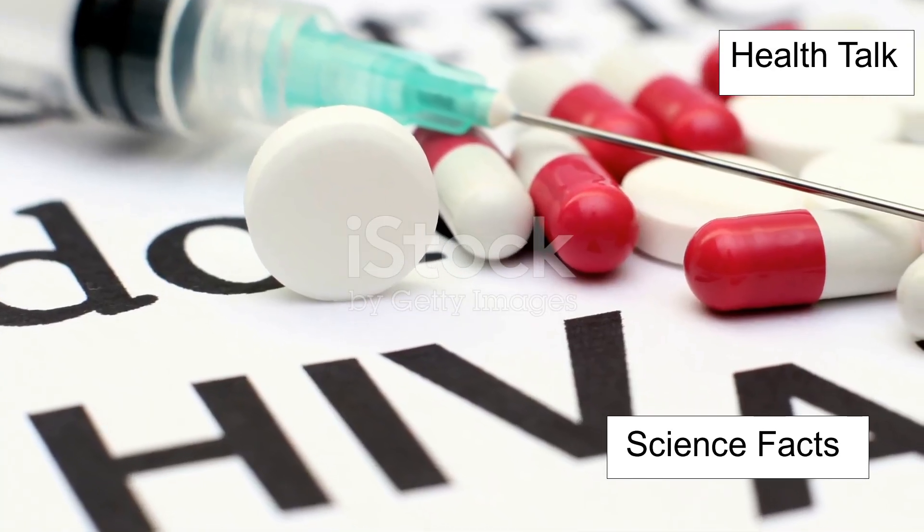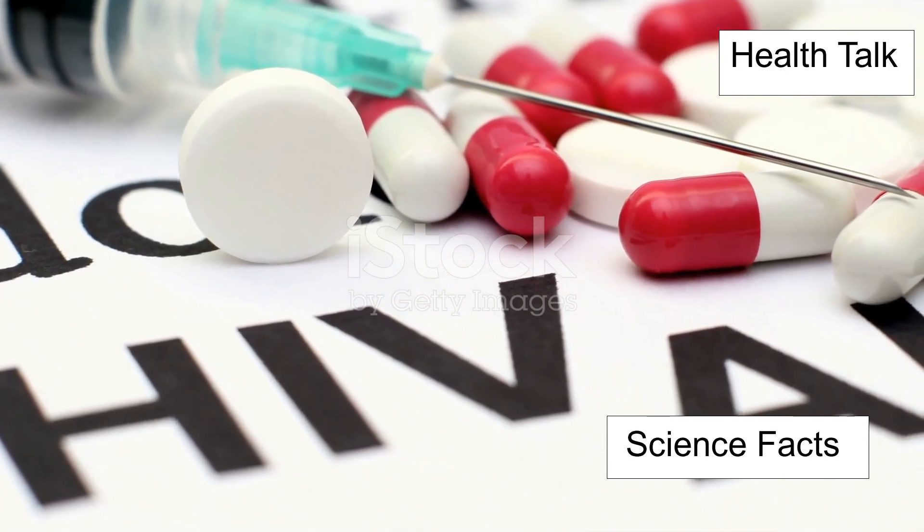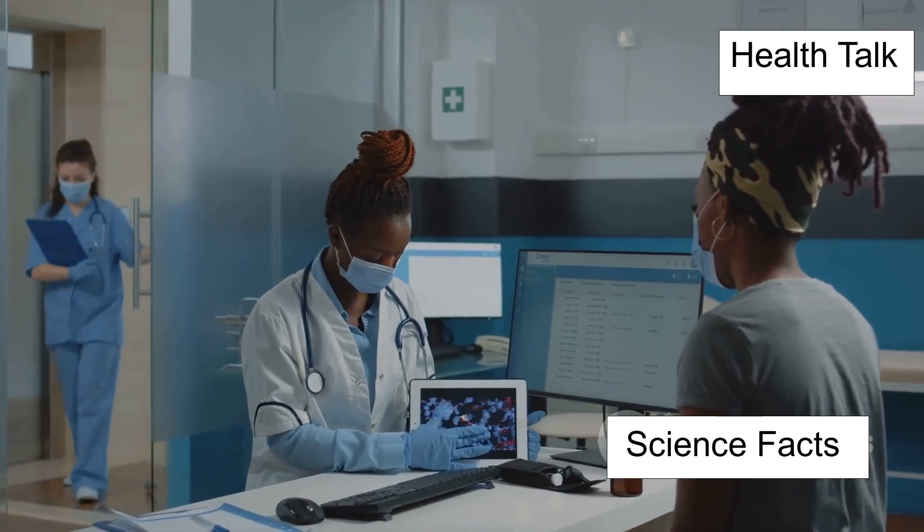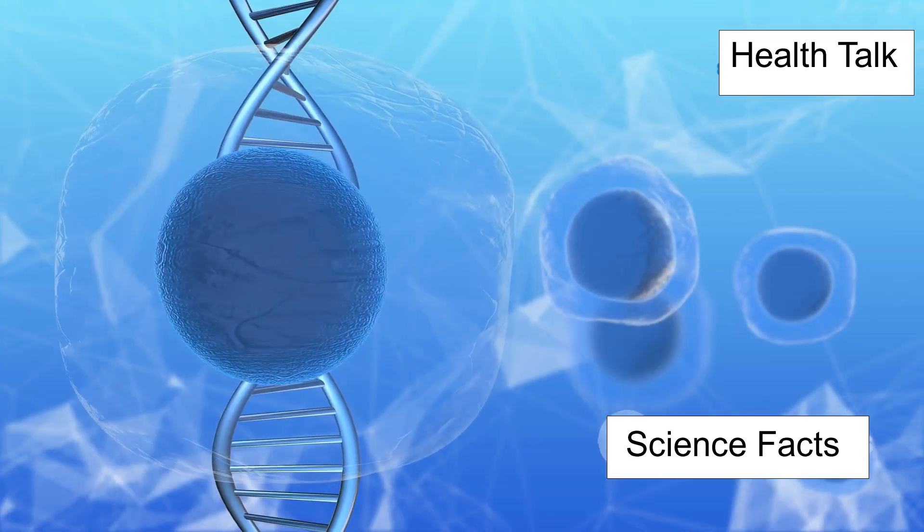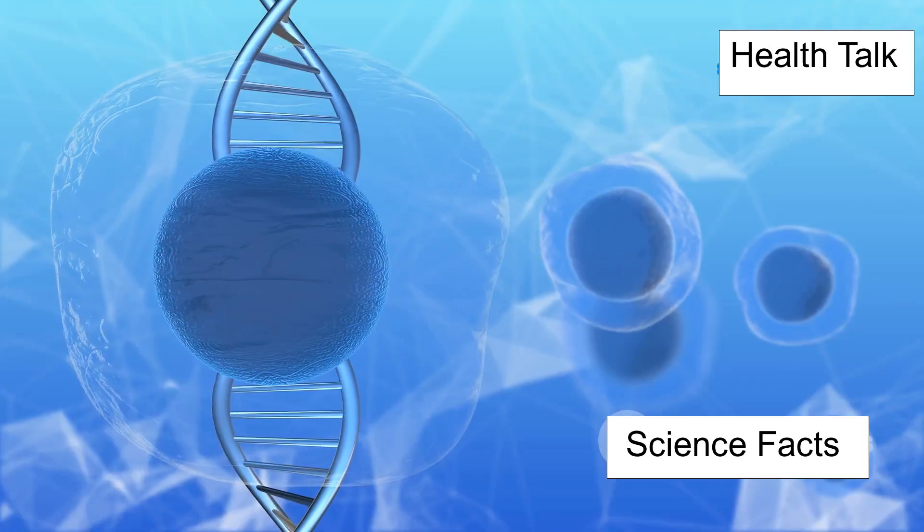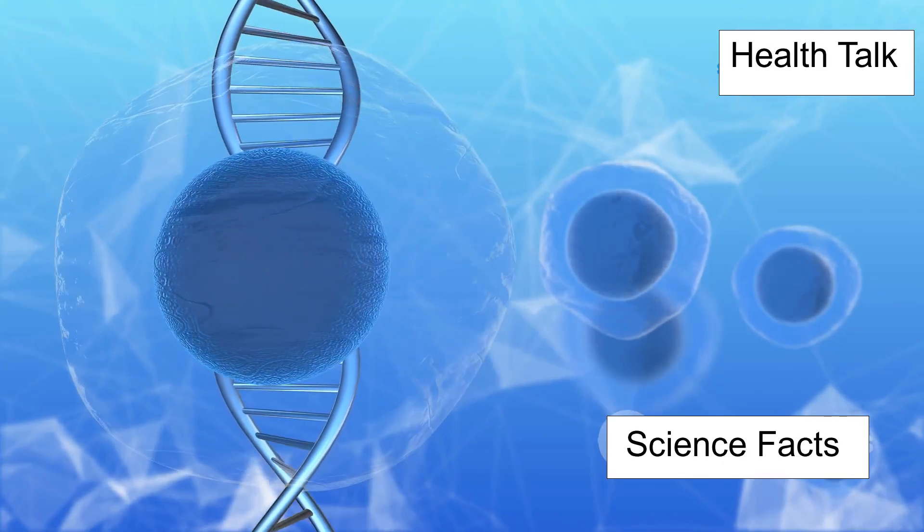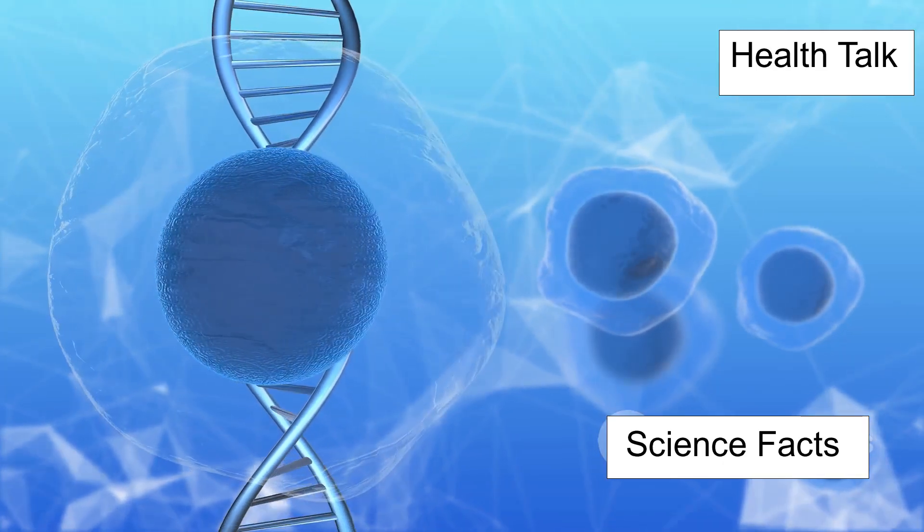But what about a real, honest-to-goodness cure? There have been a few rare cases, like the Berlin patient, Timothy Ray Brown. He had both HIV and leukemia, and his doctors gave him a stem cell transplant from a donor with a rare gene mutation, CCR5 Delta 32.